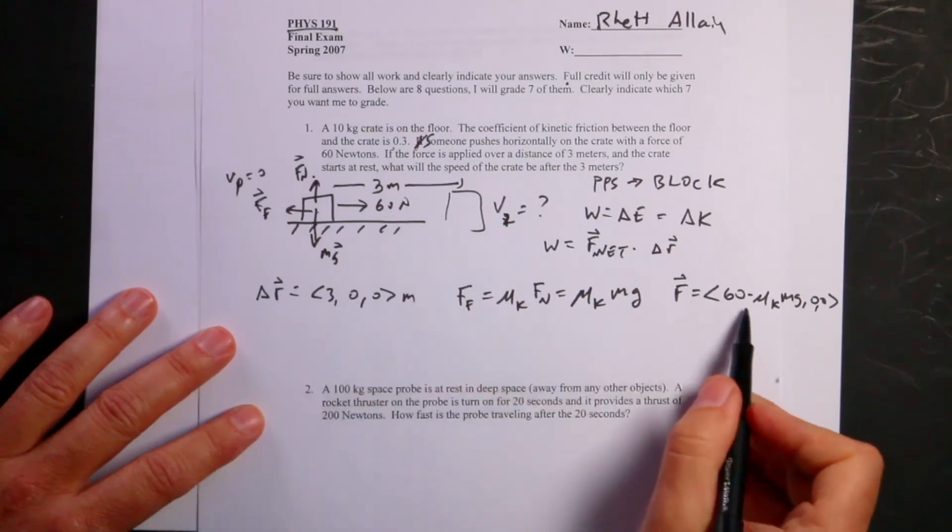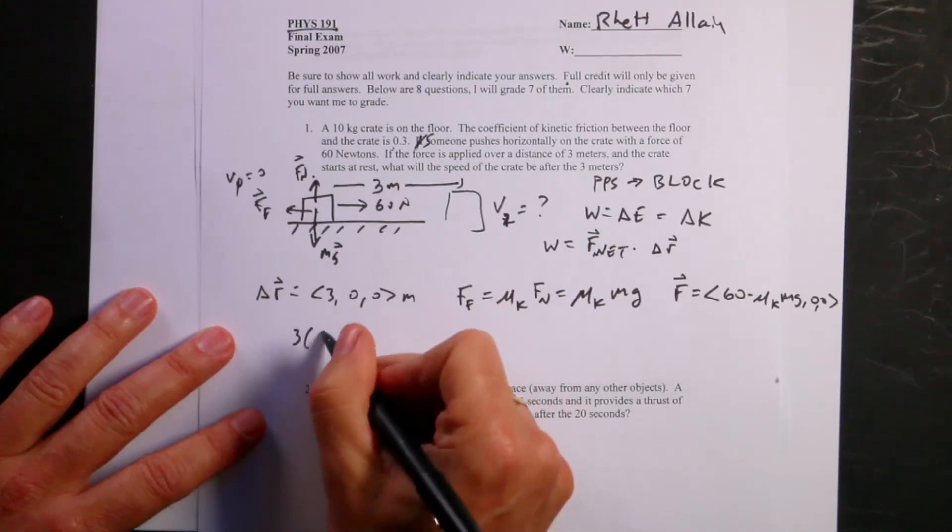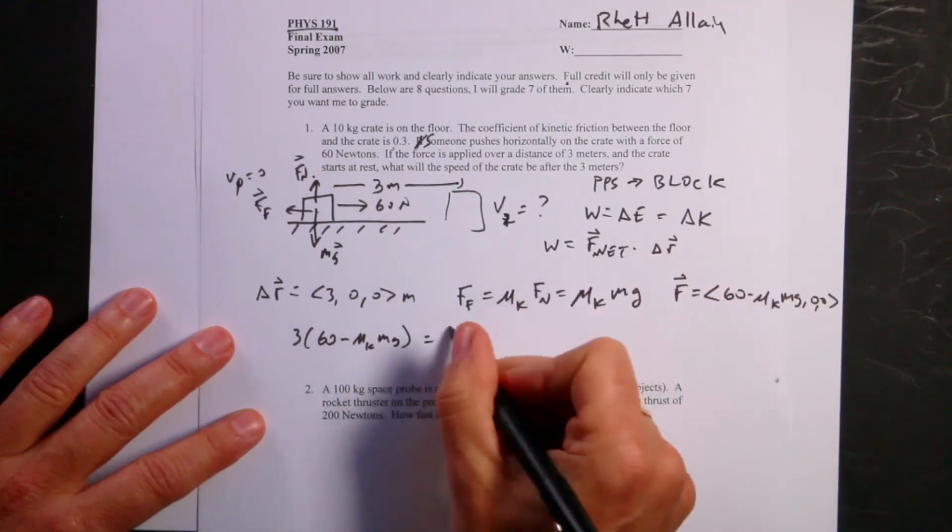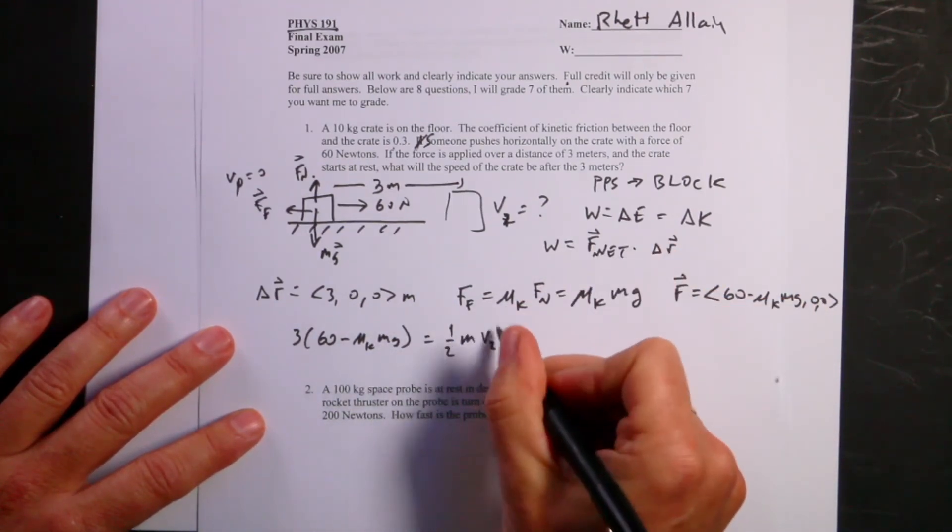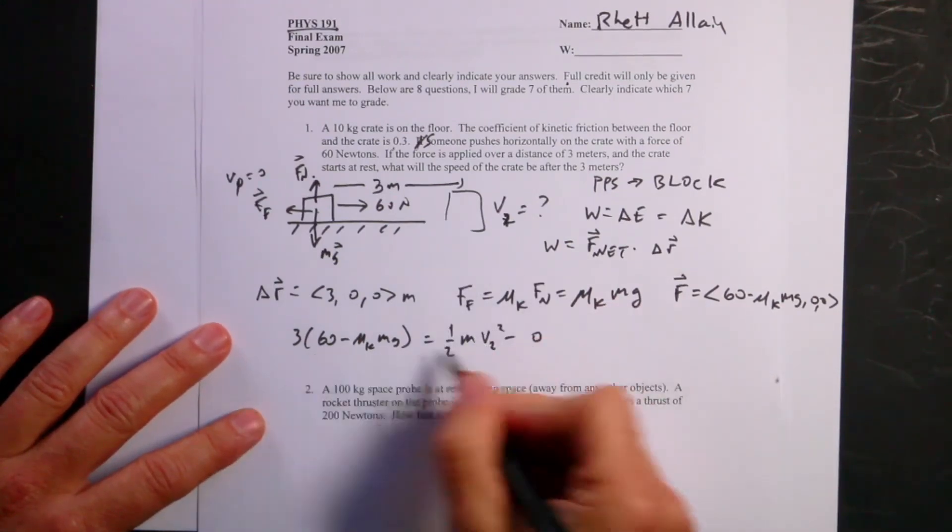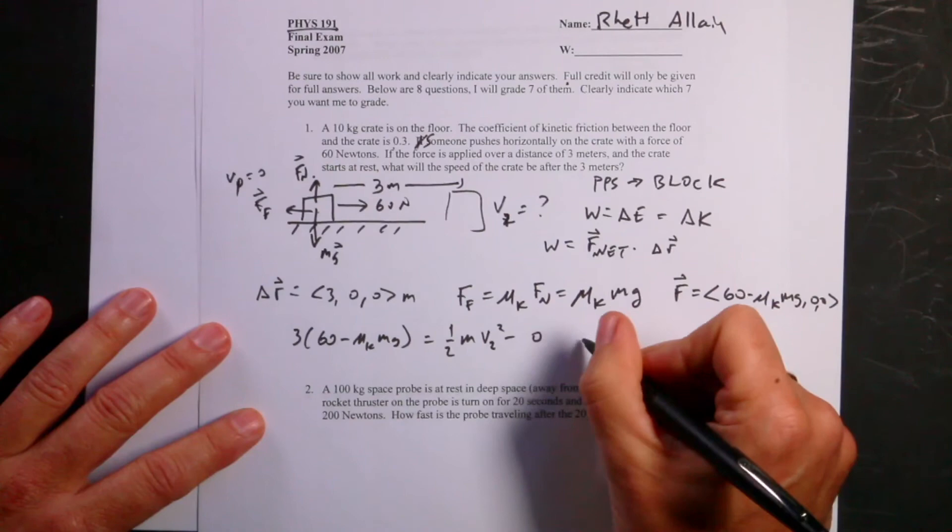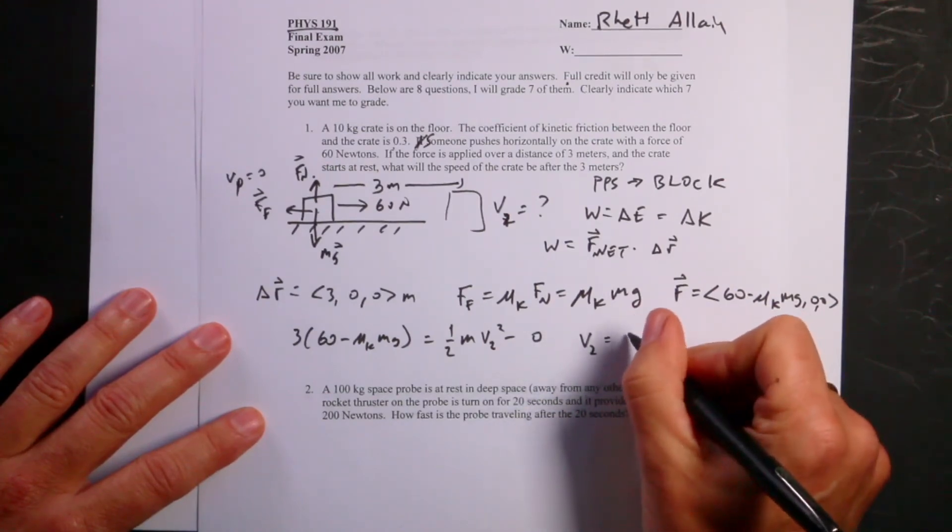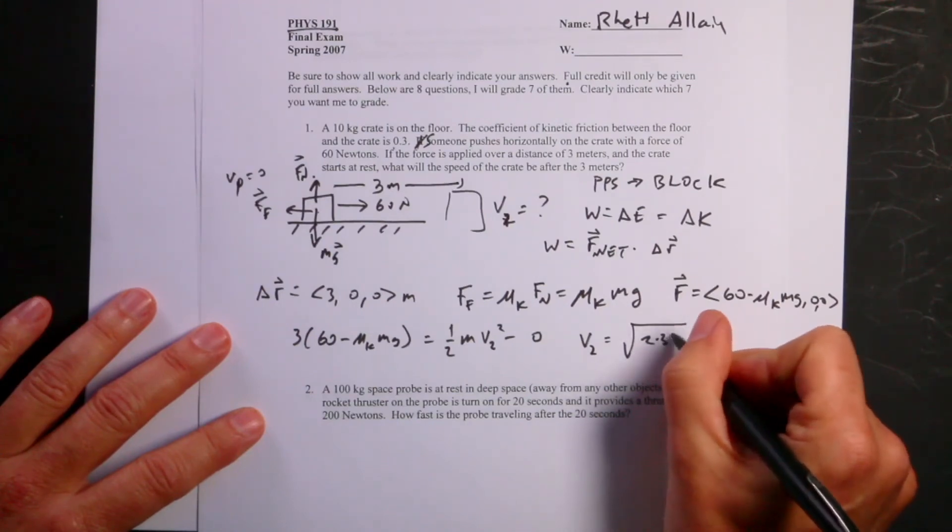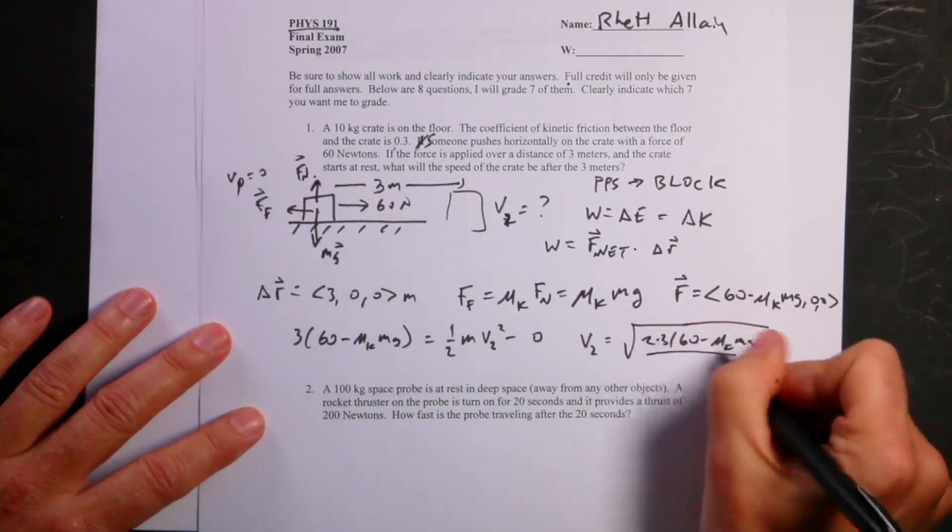When I take the dot product between these two, the only thing that survives is the x term, so I get 3 times (60 minus mu_k mg). That's going to be the change in kinetic energy, which is one half m v2 squared minus zero. The initial velocity is zero. The mass does not cancel, which is fine. I can solve for the final velocity. I get v2 equals the square root of 2 times 3 times (60 minus mu_k mg) all divided by m.